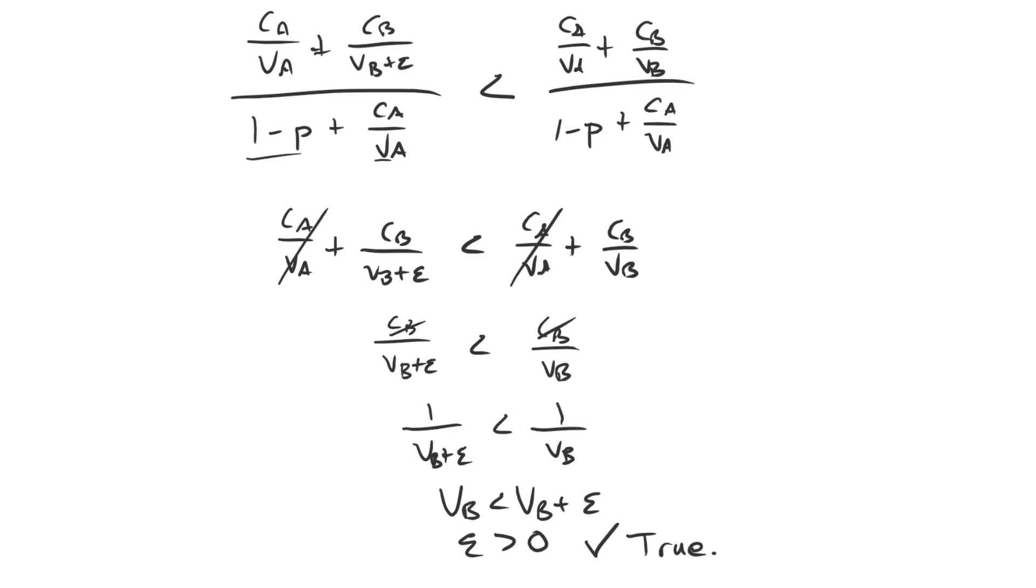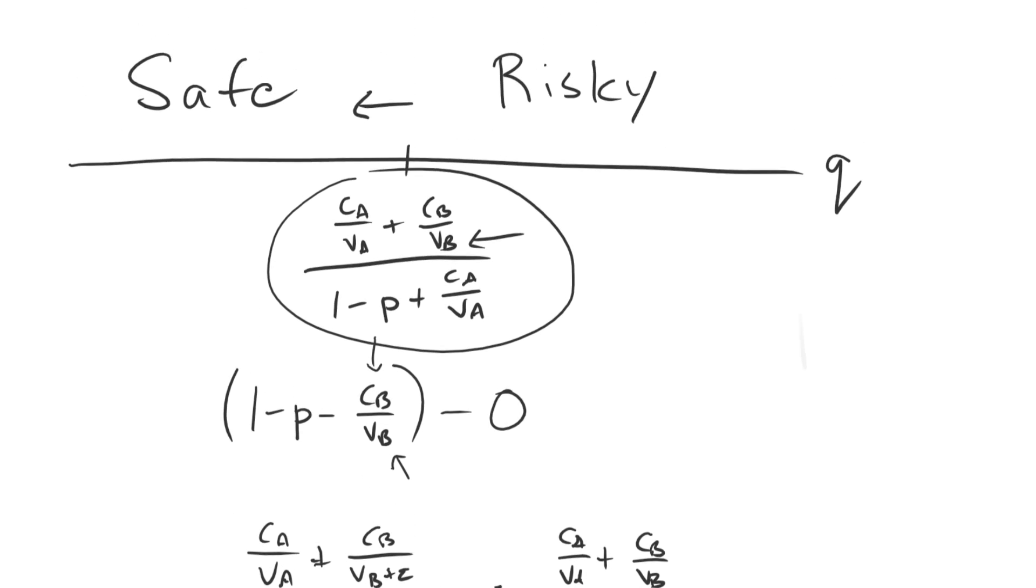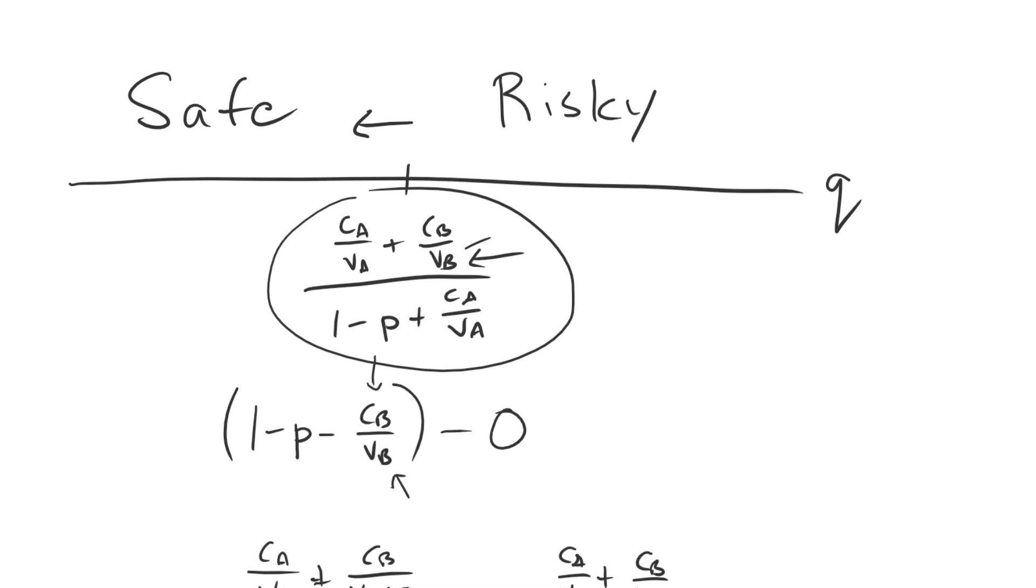This worked out. So what we have just shown is that as we increase VB, this quality right there, we increase VB, we are shifting the cut point to the left. And so we are increasing the circumstances where A is making the risky demand. Again, this is the intuitive relationship because we're making B more resolved and more belligerent. And we're seeing fighting occurring under more circumstances than before.